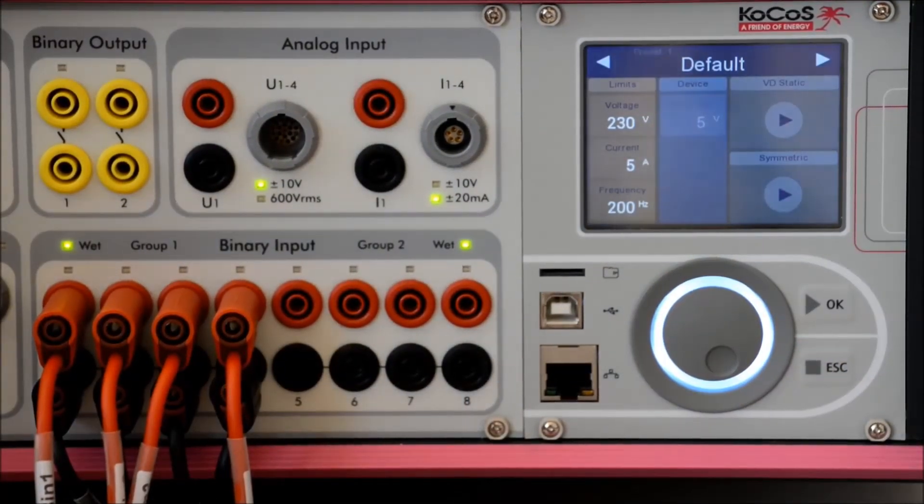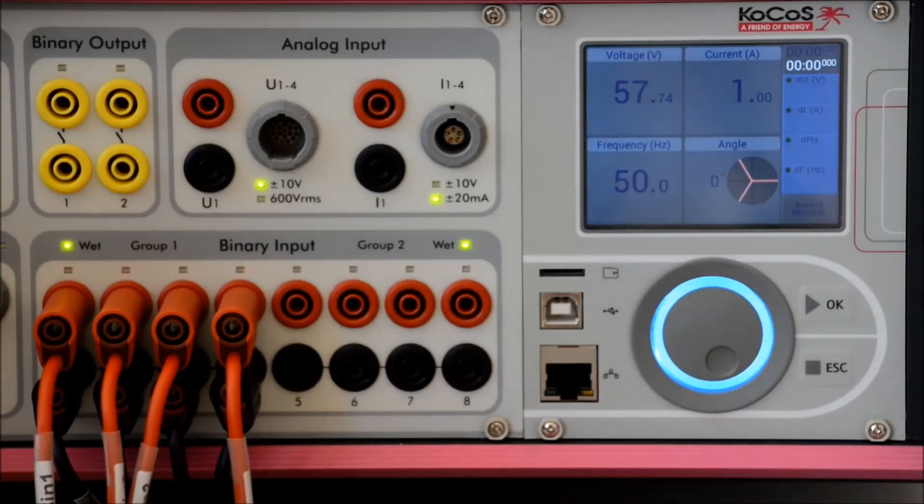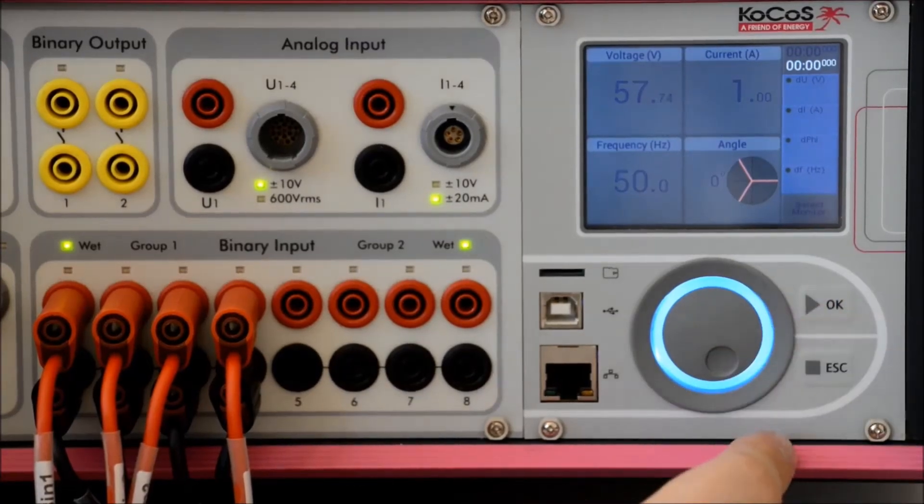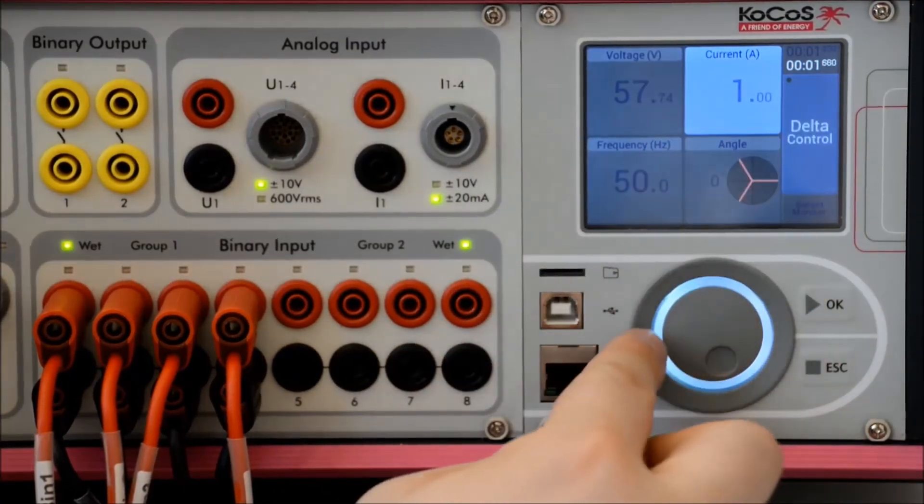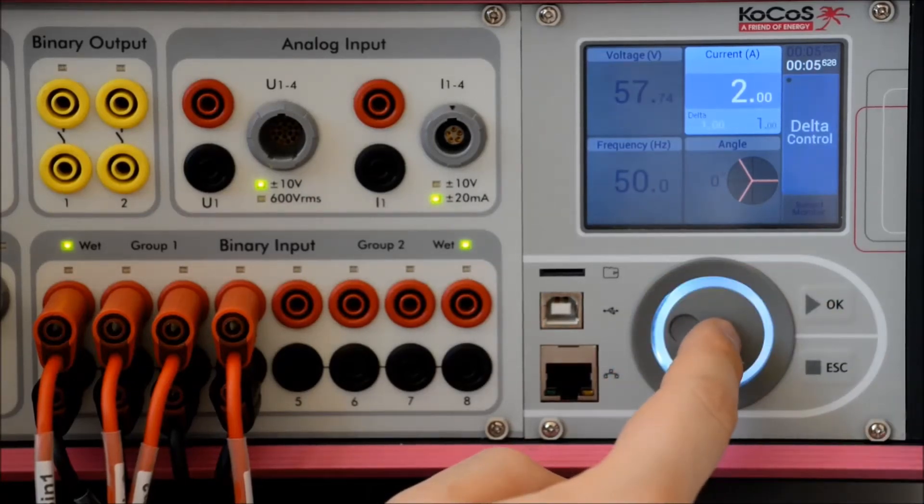I will now demonstrate how to test simple overcurrent time protection using our new interface. For this, I will be using the symmetric monitor, which allows me an easy and fast control. I know my connected relay has a trip value from 1.5 amp. So, I start my output, increase my current and accept the changes by pressing the jog dial.